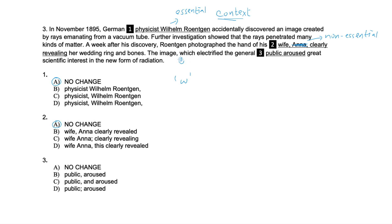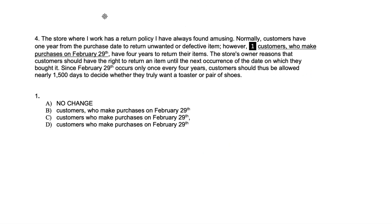You have a hint: whenever there is a comma after the subject, be careful. After that we also have a W-word — 'which' — so things are falling into place. The clause 'which electrified the general public' is non-essential, so we must have a comma before and after it, because a non-essential clause always comes between two commas or two dashes. We need a comma after 'image' and after 'public,' so our answer is option B.